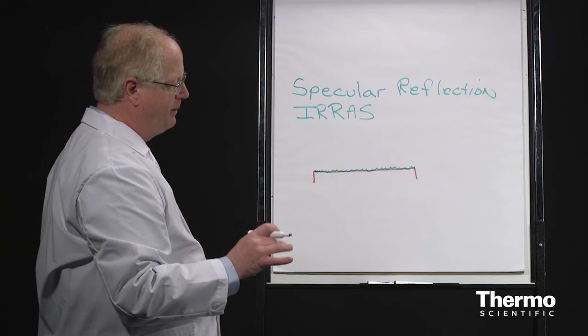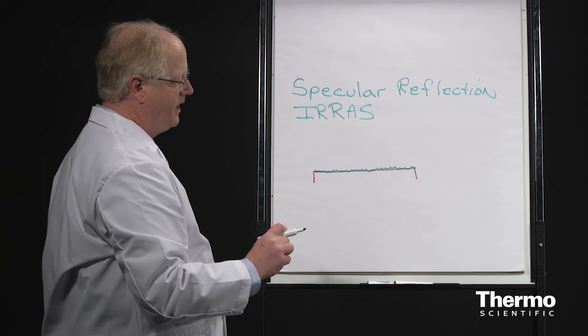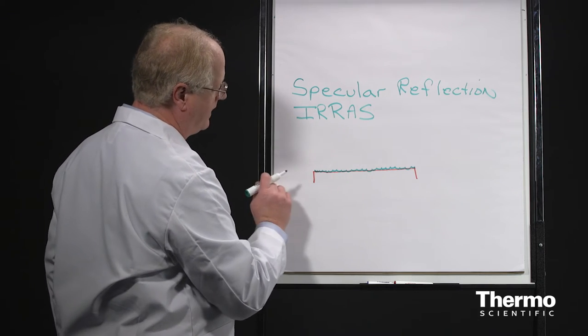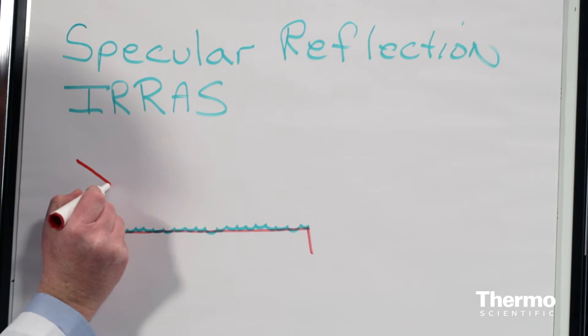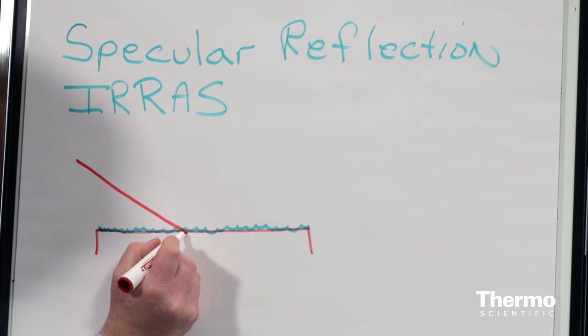We've actually been able to study, using a modification of this that I'll come to in a minute, monolayers, Langmuir-Blodgett films, things like that. So then the infrared beam is directed down onto the sample at some angle. And as it passes through the sample, it interacts with it.